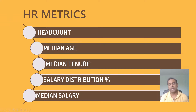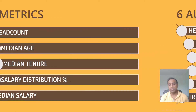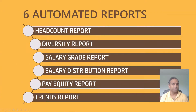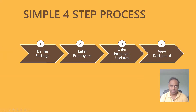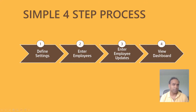You want to be able to have quick access to critical reports such as the diversity report, pay equity report, salary grade report, and headcount report. In this video, I'm going to walk you through a four-step simple process using a single Excel template that you can use to generate six automated reports instantly for your company.